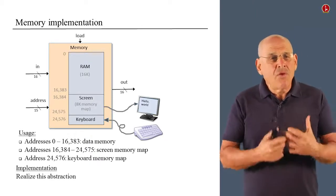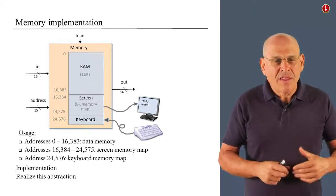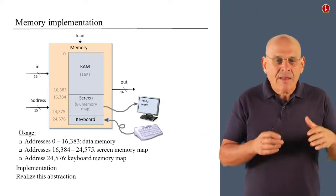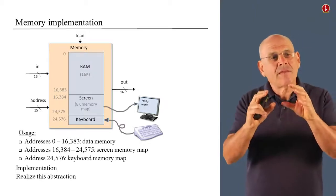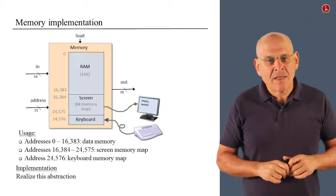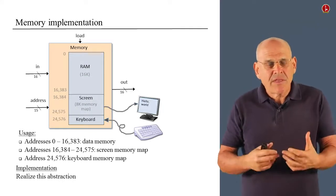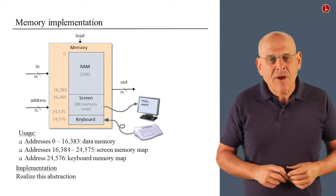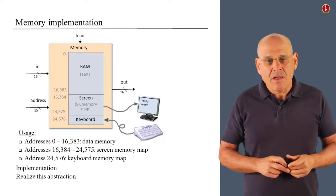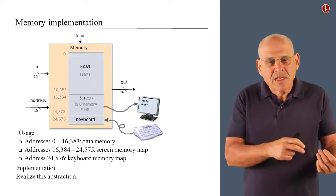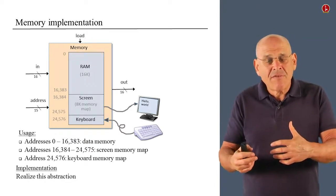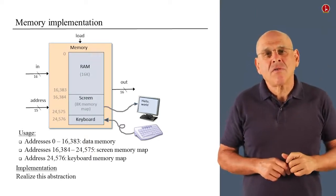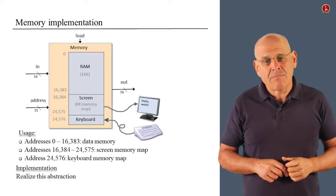So, you have to write HDL code that takes an incoming address, whatever this address may be, and funnel this address to the right chip part within the overall address space. So, if the address is below 16K, well, there's nothing to do with it. You simply retrieve the right register from the RAM chip part. But if the address is between 16384 and 24575, then you have to do something to take this address and route it to the right address in the screen memory chip.